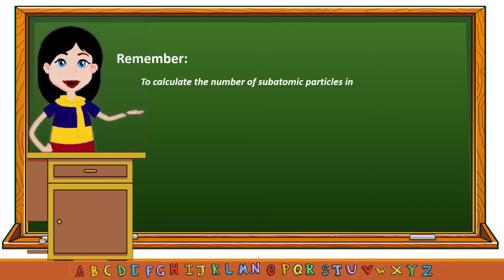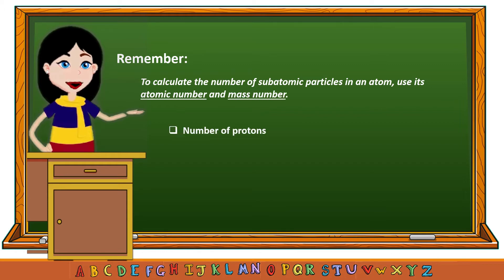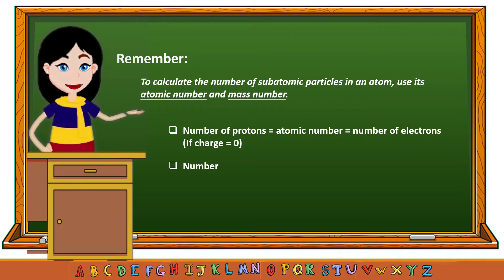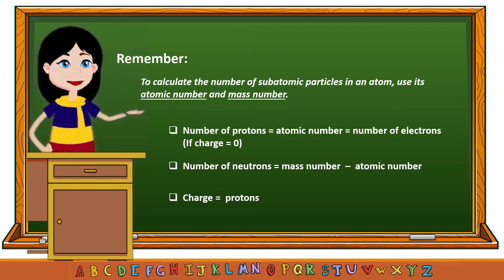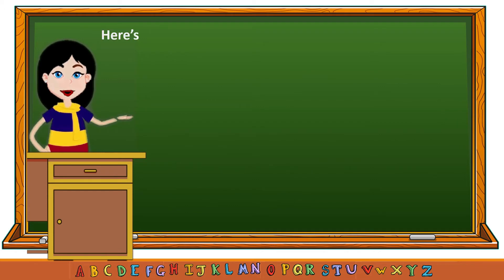Remember: to calculate the number of subatomic particles in an atom, use its atomic number and atomic mass or mass number. The number of protons is equal to the atomic number, which is also equal to the number of electrons if charge is zero. To find the number of neutrons, the number of neutrons equals the mass number minus the atomic number. To compute charge, charge equals the number of protons minus the number of electrons.